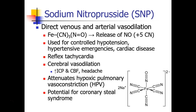Like nitroglycerin, sodium nitroprusside can lead to reflex tachycardia, cerebral vasodilation, and increases in intracranial pressure and cerebral blood flow. By delivering nitric oxide, it actually attenuates hypoxic pulmonary vasoconstriction — the reflex that decreases blood flow to a poorly ventilated lung is impaired during treatment with nitroprusside. There's also a potential for coronary steal syndrome, where diseased vessels don't vasodilate as well as other vessels, so the damaged heart served by those diseased vessels actually gets even less blood flow than before treatment.